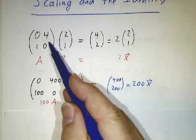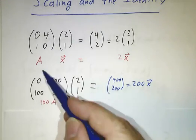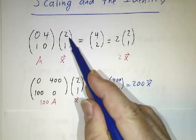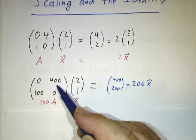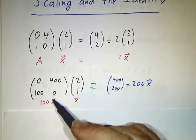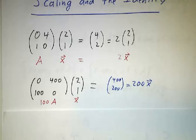So scaling a matrix by a factor of 100 doesn't change the eigenvector. (2,1) used to be an eigenvector, it's still an eigenvector. All it did was scale the eigenvalue. The matrix is 100 times bigger. The eigenvalues are 100 times bigger.